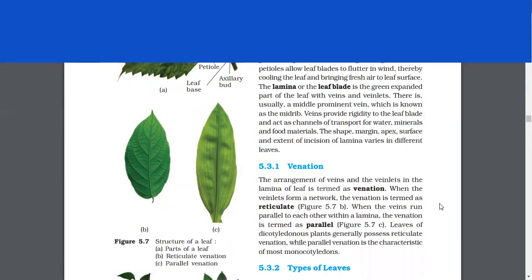There is usually a middle prominent vein, which is known as the midrib. Veins provide rigidity to the leaf blade and act as channels of transport for water, minerals, and food materials. The shape, margin, apex, surface, and extension of incision of lamina varies in different leaves.